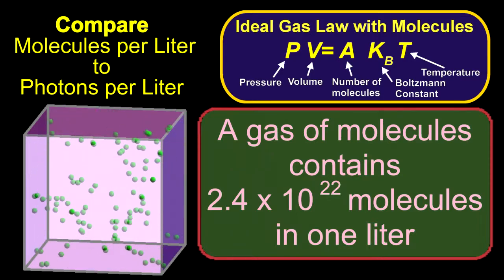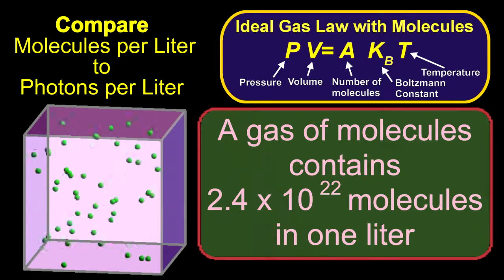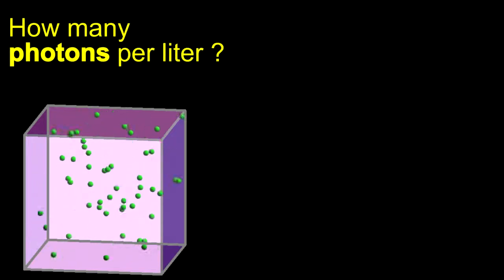Now we can use our analogy that photons are like atoms and ask how many photons are in a one liter container.